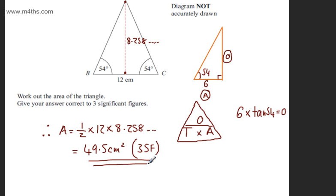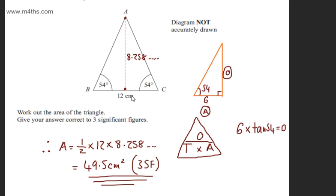So I've found the perpendicular height of the triangle using trig ratios and then simply used the standard area of the triangle formula.